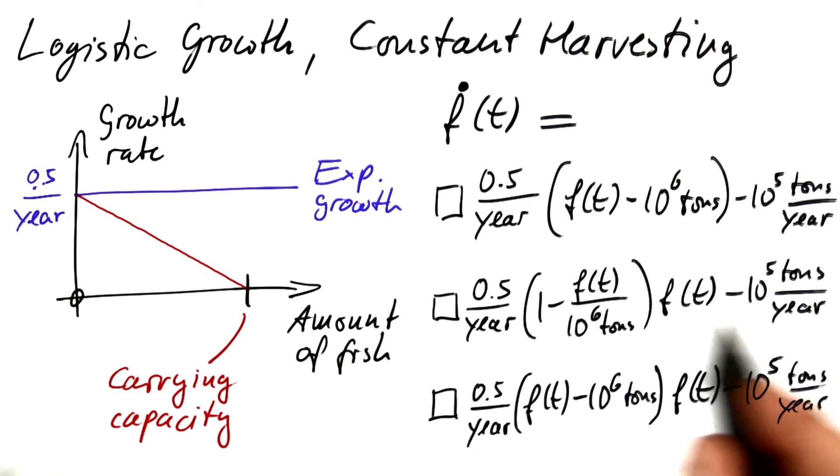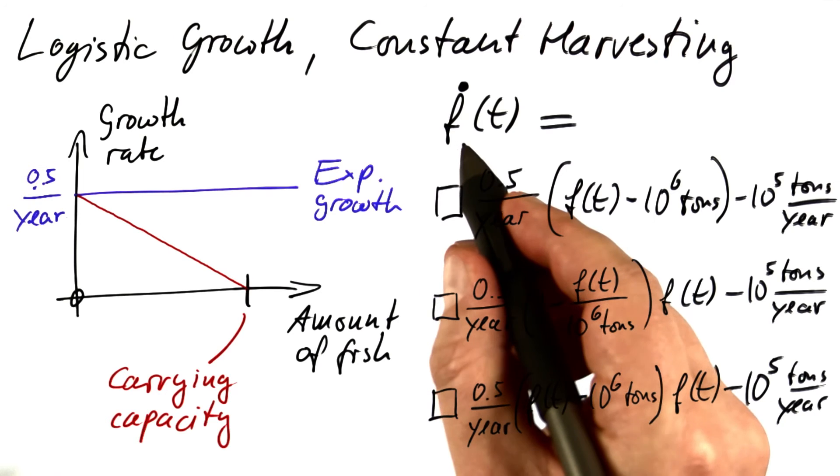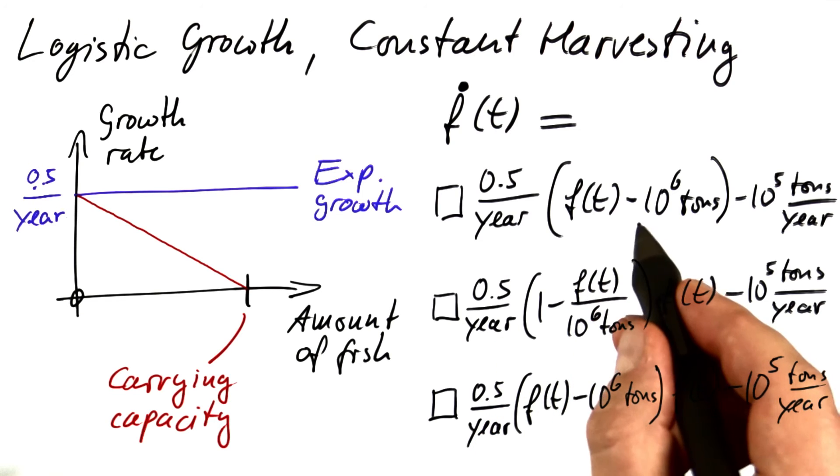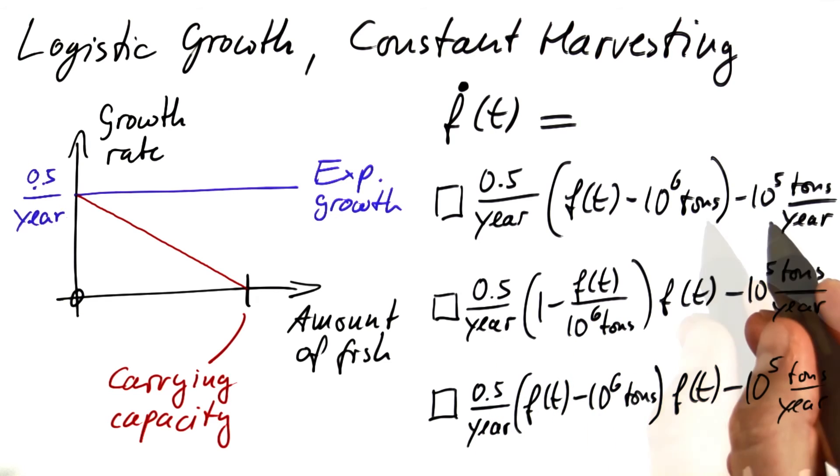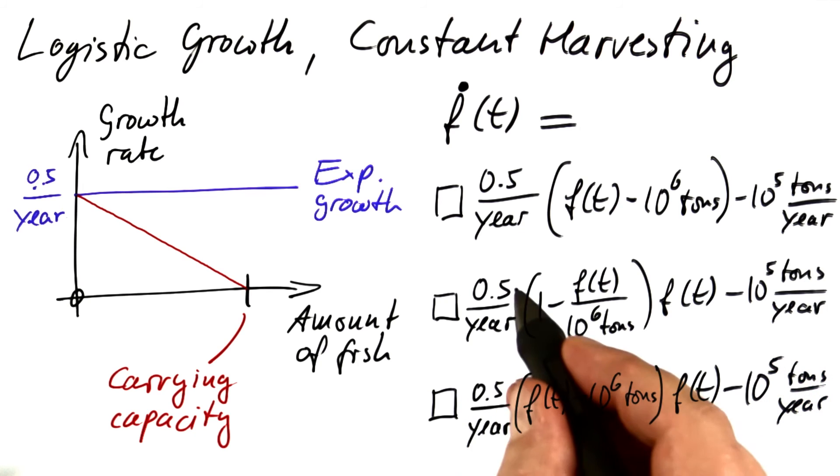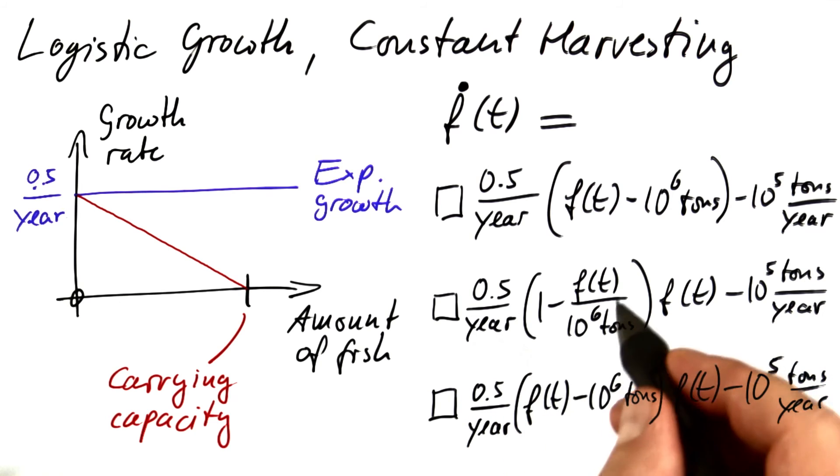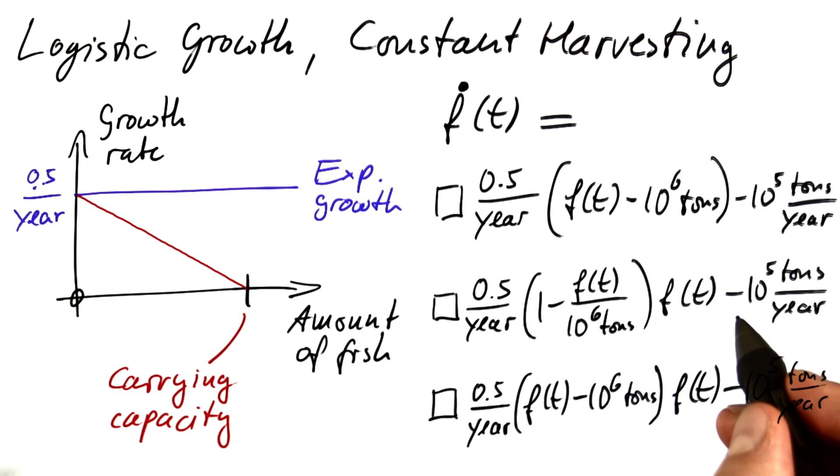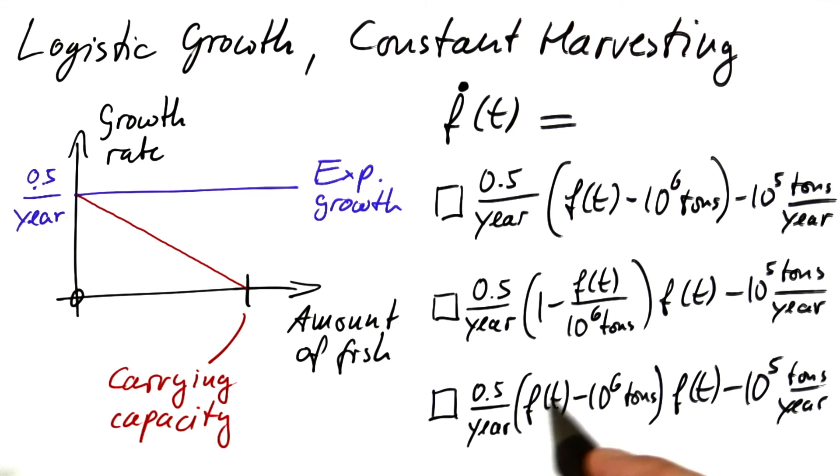Here are three options for you to choose from. Should the rate of change of the amount of fish be 0.5 over 1 year times the amount minus 10 to the 6 tons, minus 10 to the 5 tons per year, or should it be 0.5 per year times 1 minus the amount over 10 to the 6 tons, times the amount minus 10 to the 5 tons per year, or should it be 0.5 per year times the amount minus 10 to the 6 tons, times the amount minus 10 to the 5 tons per year.